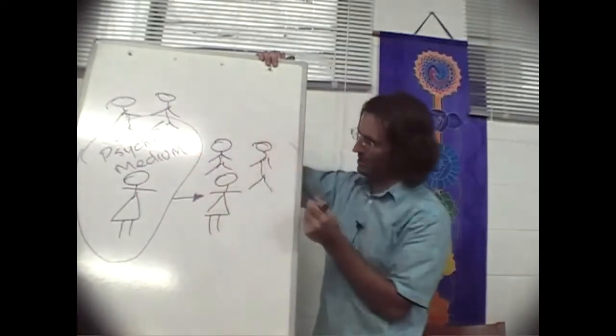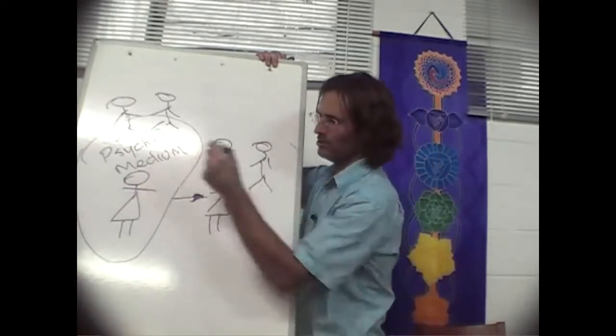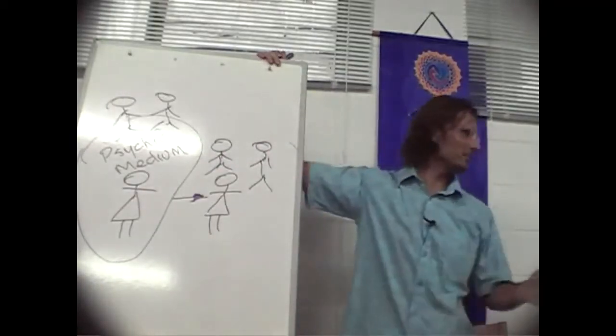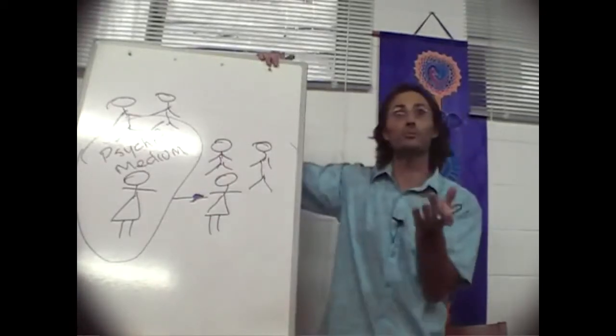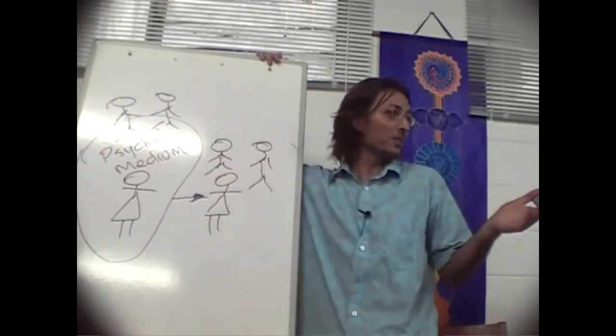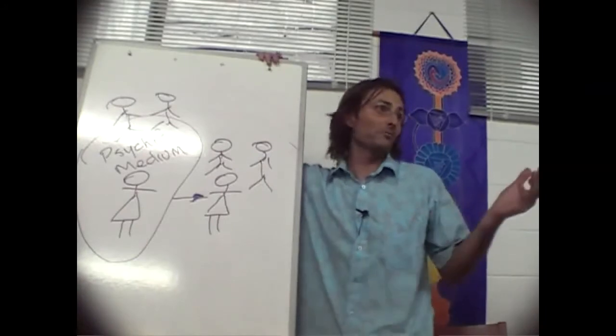So what's happening is you go along to this medium to find out about how you're doing, and they say there's this person here, there's this and that. And sometimes you might recognize them as a relative, a past relative or something. But oftentimes you don't even recognize them at all.